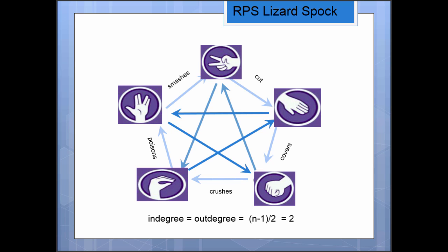Rock crushes lizard. Lizard poisons Spock. Spock smashes scissors. And then he works inside. He goes, scissors decapitates lizard. Lizard eats paper. Paper disproves Spock. Spock vaporizes rock. And rock crushes scissors.